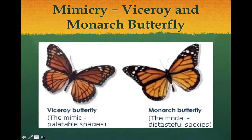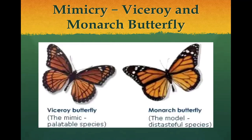Here's another example of mimicry: the viceroy butterfly and the monarch butterfly. Birds love to go after butterflies, but the monarch leaves a bitter taste in their mouth. The viceroy butterfly looks very similar to the monarch — same black, orange, and spots. The viceroy is not distasteful to birds, but they look similar. A bird is not going to think, 'Is that a monarch or a viceroy?' — it will just see those colors and avoid it, and the butterfly can live to see another day.